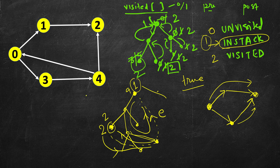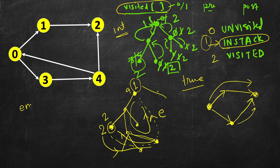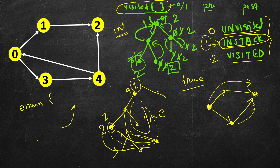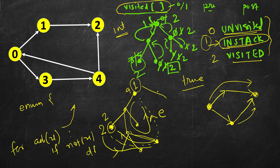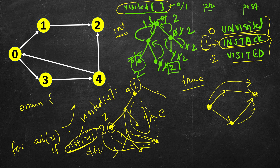So the modification to normal DFS is: make the visited array integer type instead of boolean. If you want to write cleaner code, you can define enums in C++ or Java. Instead of 0, 1, 2 use named constants: unvisited, in_stack, visited. For adjacent nodes, if visited equals 1 return true; if unvisited, trigger DFS from there.